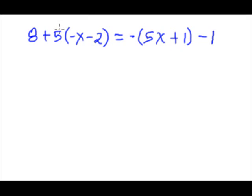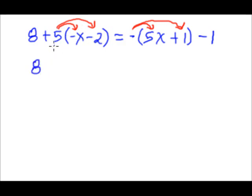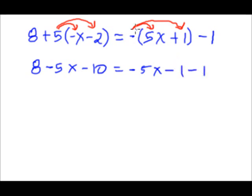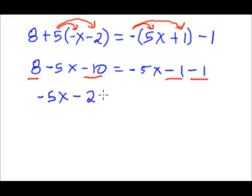So we're going to do the same thing we normally do. We're going to use the distributive property if there are parentheses, and be careful with that negative — we've got to subtract everything. Remember, multiplication always comes first in your order of operations. This gives me eight minus five x minus ten, equals negative five x minus one minus one. That negative has to distribute as well. I have eight and negative ten on the left, and negative one minus one on the right.